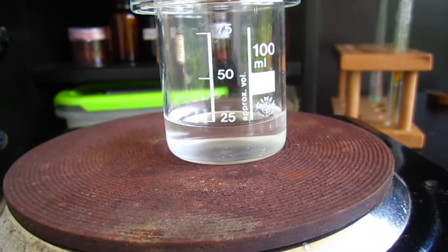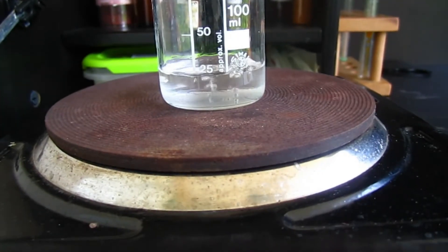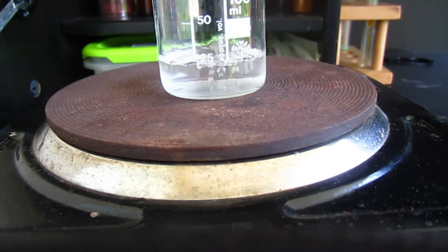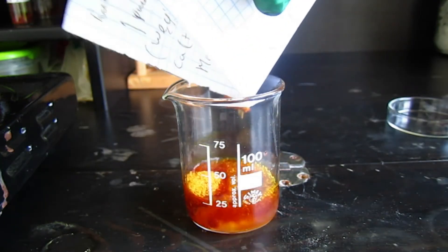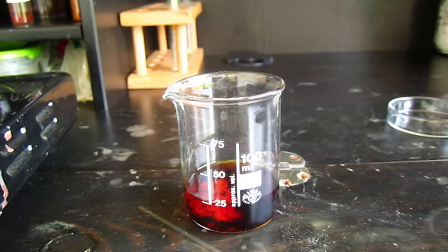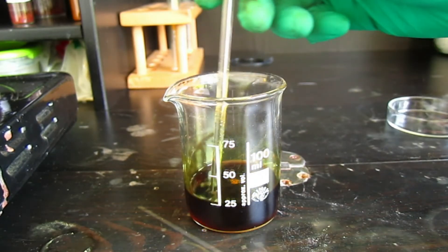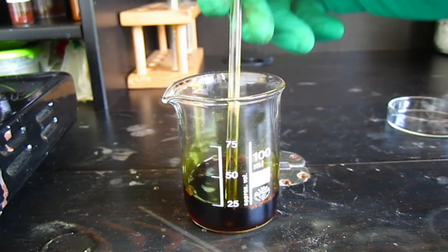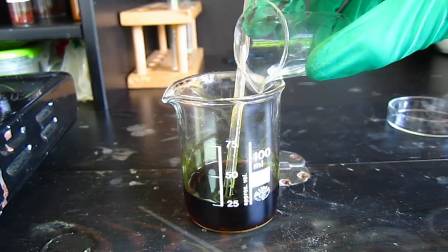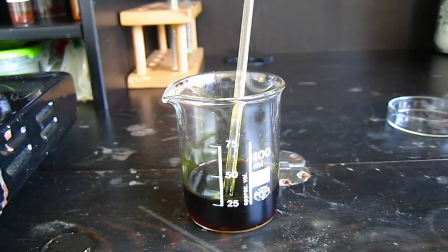So now I'm going to recrystallize this 1,3-diphenyl triazine from some ethanol. The alcohol started boiling, now I'm going to take it off the heat and drop in the triazine. So it dissolved pretty well and now I'm just going to add a few drops of water, and now I'm going to cool it immediately.